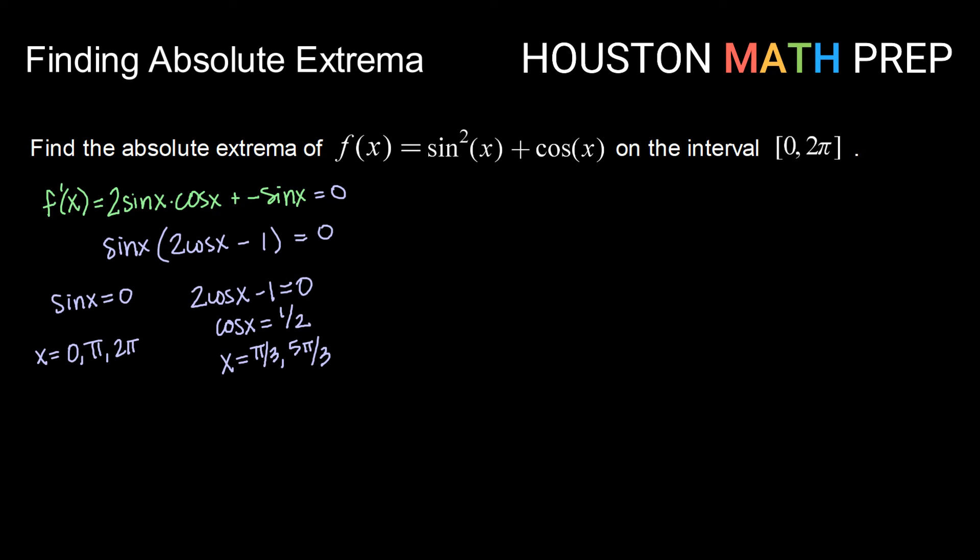Okay, now to figure out which of these values gives us our absolute minimum and our absolute maximum, we're going to just go ahead and make a table of values and evaluate each one of those in our function. So notice here, two of our critical points, 0 and 2 pi, are also our endpoints. So we don't have to test those more than once, we'll just include them in the table. So we have 0, pi over 3, pi, 5 pi over 3, and 2 pi.